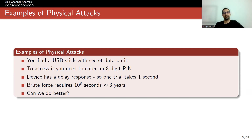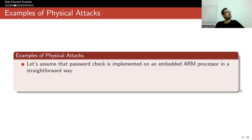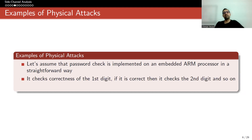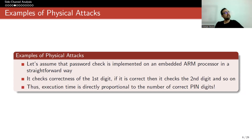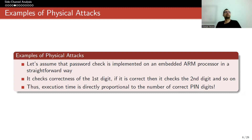Let's look at the design and make some assumptions. Assume that the password check is implemented on an embedded ARM processor in a straightforward way: it checks correctness of the first digit; if correct, checks the second digit; if correct, continues to the third. But at any step, if it is not correct, it gives an error saying you cannot log in. Thus, execution time is directly proportional to the number of correct PIN digits, because this determines how many operations the device makes. For an 8-digit PIN, if your first 7 digits are correct, it has to perform all of the digit operations. If the first digit is wrong, it only performs one operation and gives an error. The time depends on how many of the first digits you provide correctly.